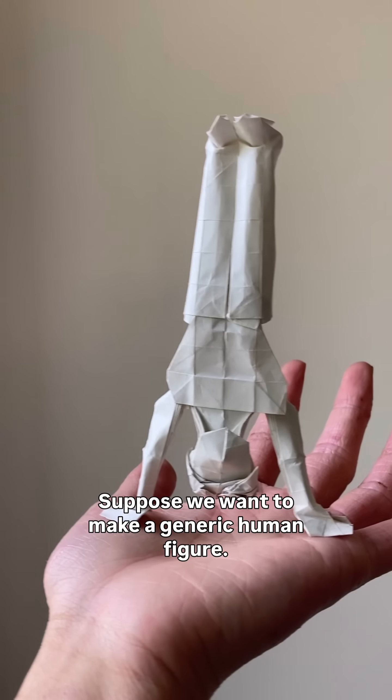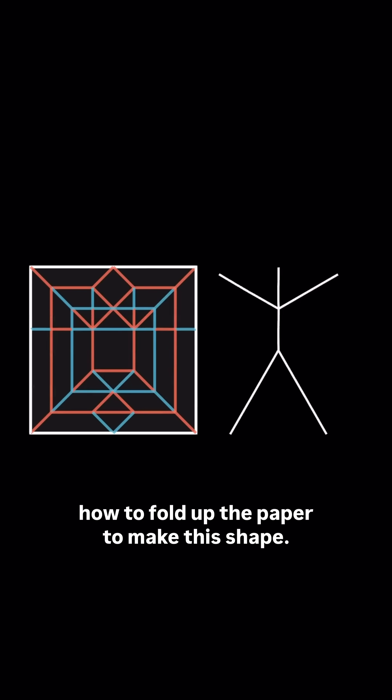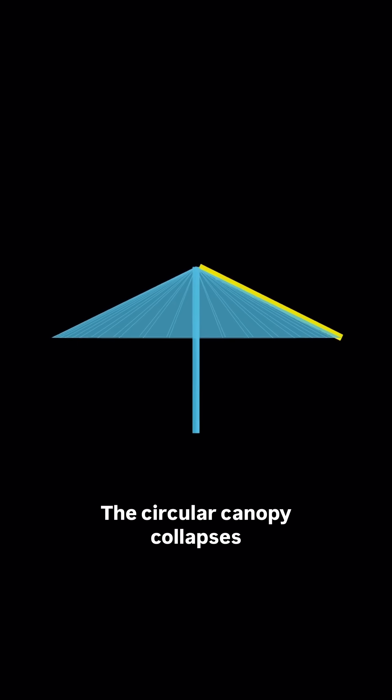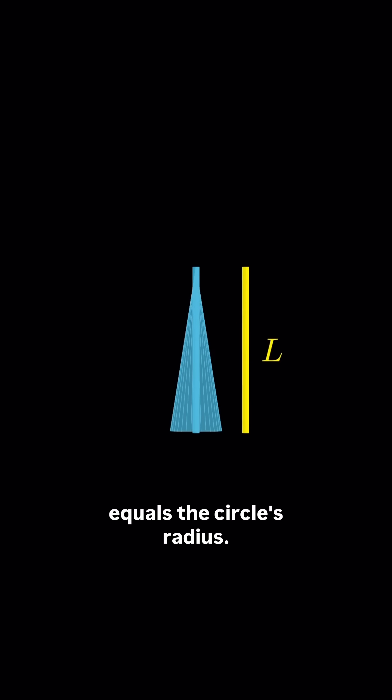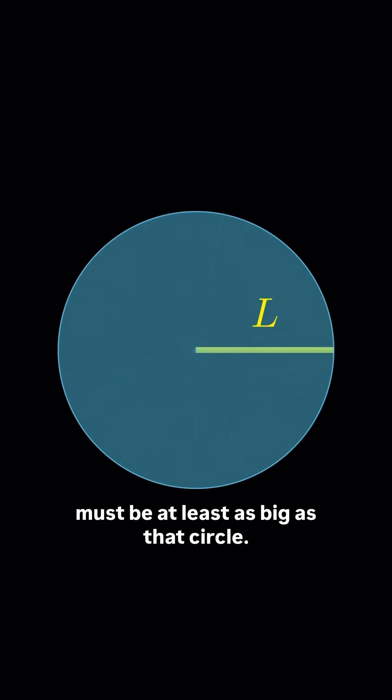Suppose we want to make a generic human figure. Our goal is to figure out how to fold up the paper to make the shape. Let's think of each flap as an umbrella. The circular canopy collapses into a stick whose length equals the circle's radius. So if we want a stick that long, then the paper needed for that flap must be at least as big as that circle.